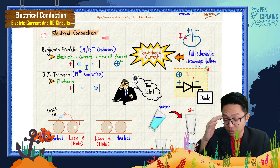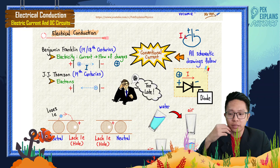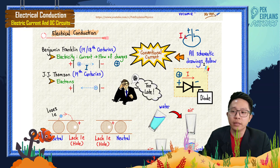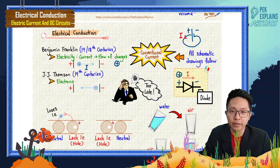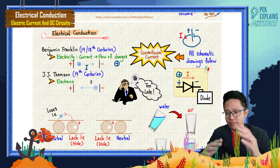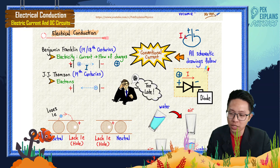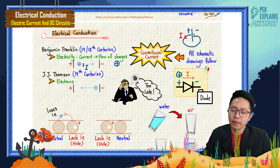Since electrons were discovered later, they didn't change the schematic drawings. They kept the conventional idea of current as the flow of positive charge, because we cannot change everything just because we discovered electrons later. Actually, the concept of positive charge flowing in the opposite direction to the electron — positive charge from positive to negative, electron from negative to positive — these two ideas support each other.